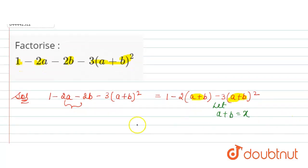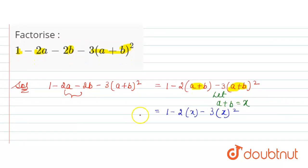In place of a plus b, we can write x. So it is 1 minus 2x minus 3, a plus b is x square. We can write it as 1 minus 2x minus 3x square.